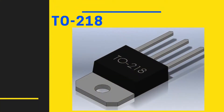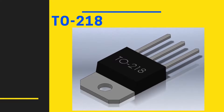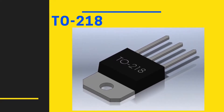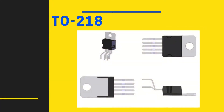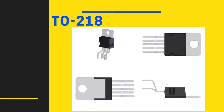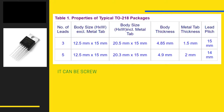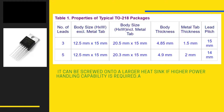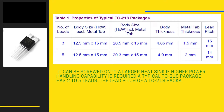The TO218 is a plastic molded package that features a flat metal tab at its back to enable it to dissipate relatively large amounts of heat. The TO218 is commonly used for housing power transistors and can be screwed onto a larger heat sink if higher power handling capability is required. A typical TO218 package has 2 to 5 leads, and the lead pitch varies depending on the number of leads.